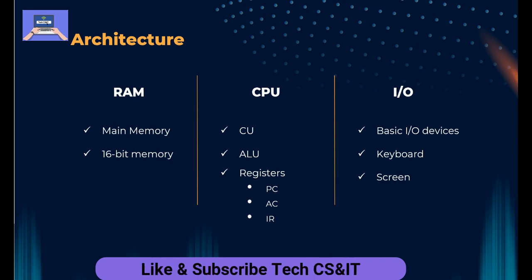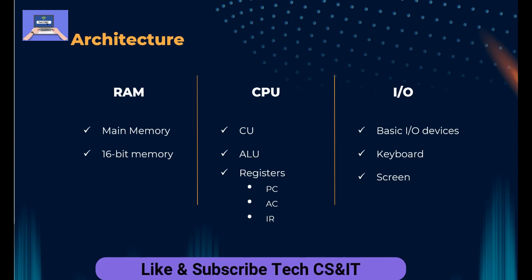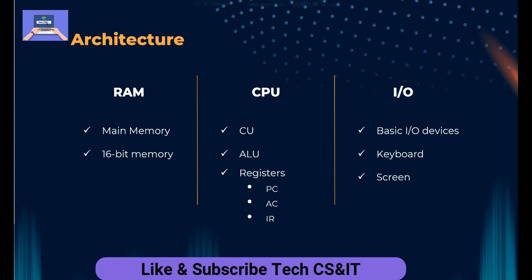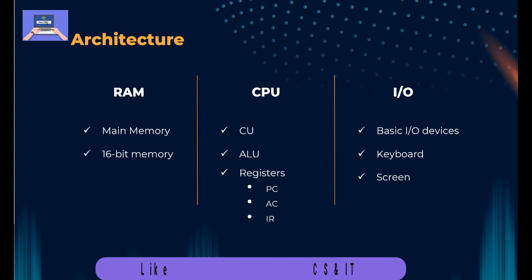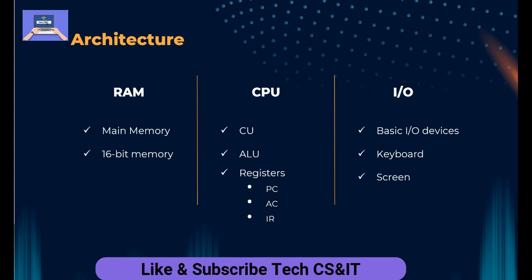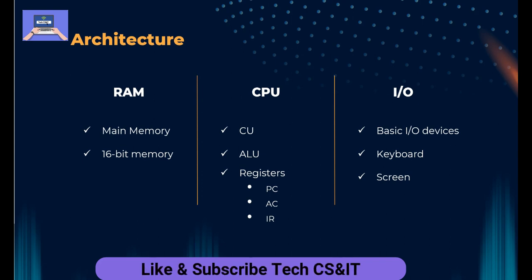The registers include the Program Counter (PC), the Accumulator (AC), and the Instruction Register (IR). There are also some input/output devices like the keyboard, screen, etc. These are the basic input/output devices of the hypothetical machine.